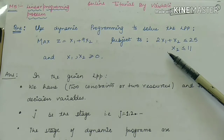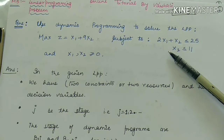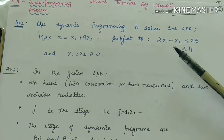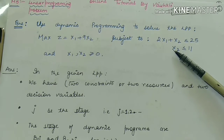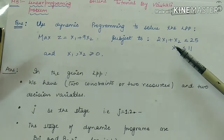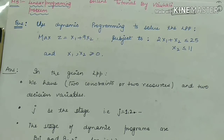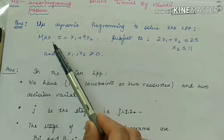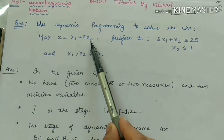We have a given question. In the question, an LPP is given. The objective function is of maximization type. We have two given constraints depending on two decision variables, x1 and x2, which are greater than or equal to 0. We have to solve it by the concept of dynamic programming.